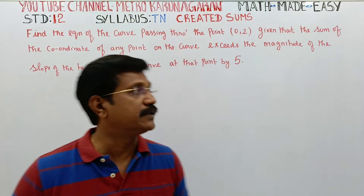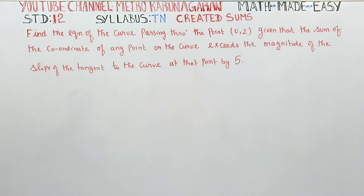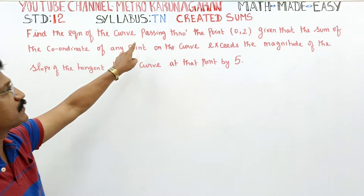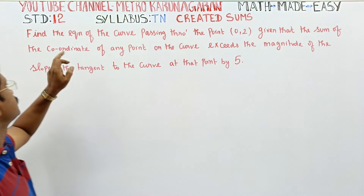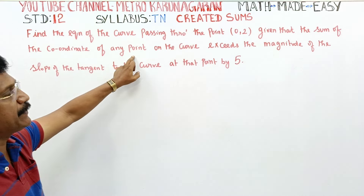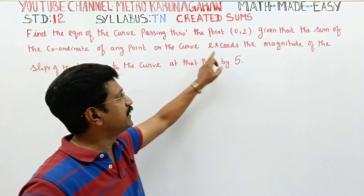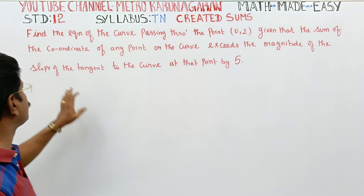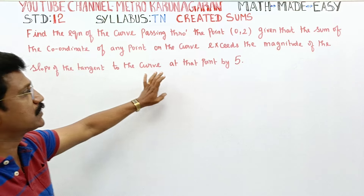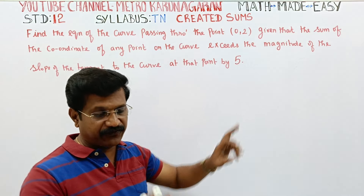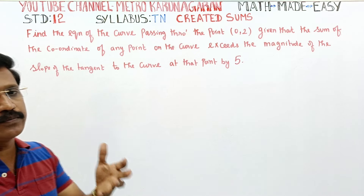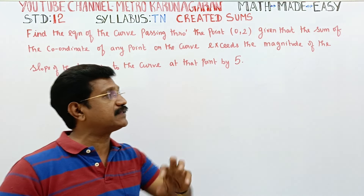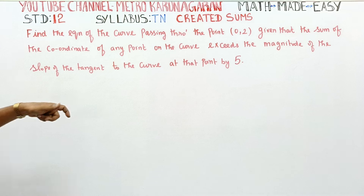You will find the equation of the curve passing through a given point, given that the sum of the coordinates of any point of the curve exceeds the magnitude of the slope of the tangent to the curve at that point by 5. This is the wording of the problem. What is the question?